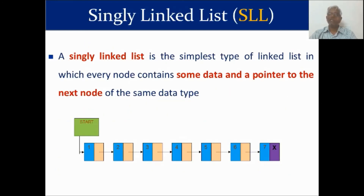A singly linked list is the simplest type of linked list, in which every node contains some data and a pointer to the next node of the same data type. In a singly linked list, each node has only one pointer that points to the next node. One-way traversal is possible: the first node points to the second, the second to the third, and so on.